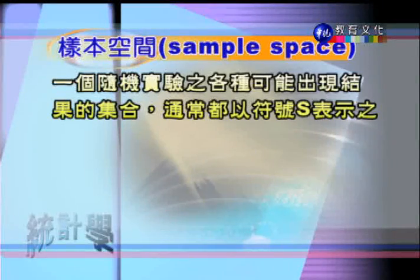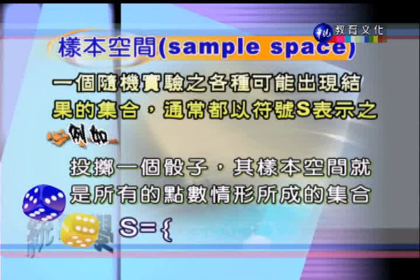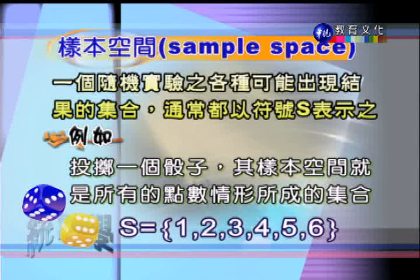再來介紹樣本空間。樣本空間是指一個隨機試驗各種可能出現結果的集合，通常用英文大寫字母S來表示。舉例來說，丟一個骰子出現的結果所成的集合就是樣本空間，可以寫成 S = {1, 2, 3, 4, 5, 6}。